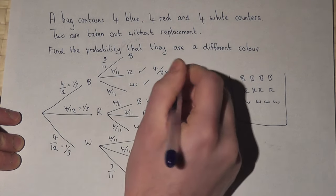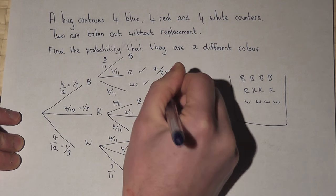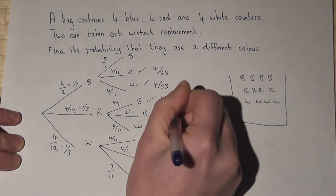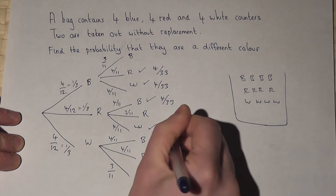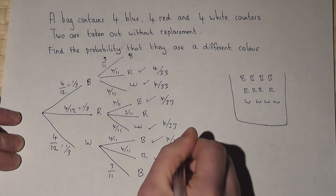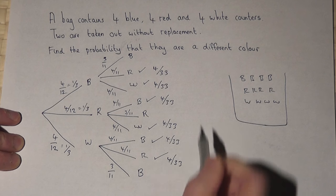One times four is four, three times eleven is thirty-three, and so four over thirty-three. And finally four over thirty-three. So they're the options.